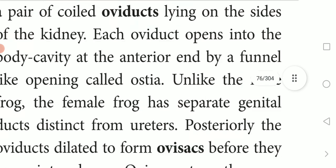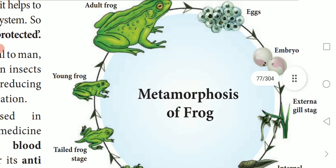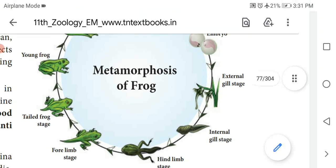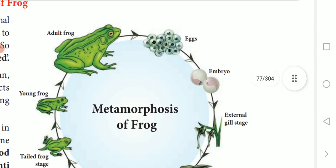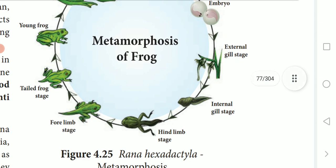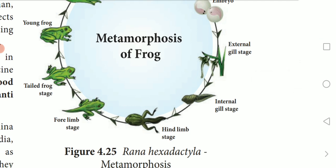The newly hatched tadpole lives off the yolk stored in its body. It gradually grows larger and develops three pairs of gills in the internal gill stage. The tadpole then grows and metamorphoses into an air-breathing, carnivorous adult frog.